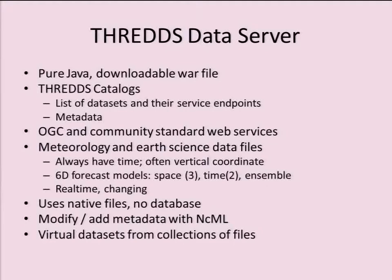An important thing about Earth science data files is that they don't look like 2D GIS data — they always have time and often have vertical coordinates. The most complicated are six-dimensional forecast models: numerical forecasts run every six hours or less, with a run-time dimension and a forecast-hour dimension. So you've got three space dimensions, two time dimensions, and sometimes an ensemble dimension — six dimensions total — which doesn't fit into traditional GIS.